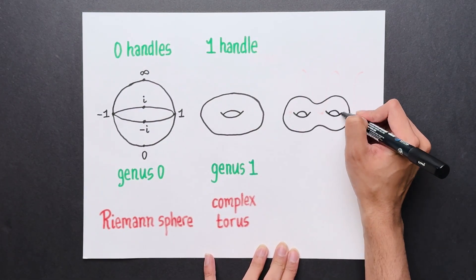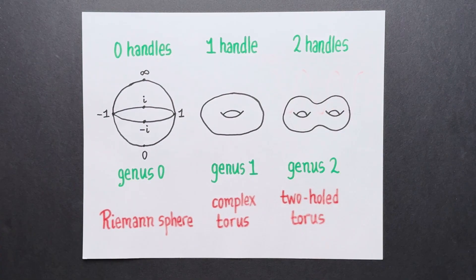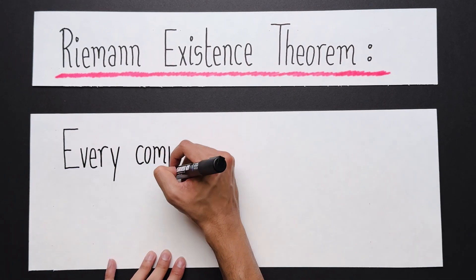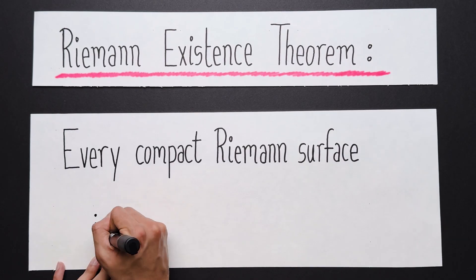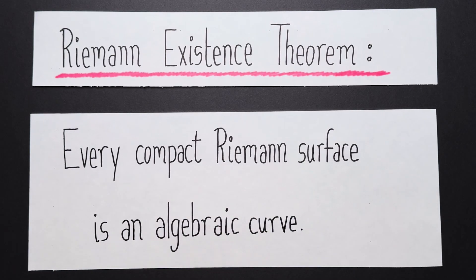It turns out that they have a deep link to a field of math called algebraic geometry. This is spelled out in a theorem called Riemann's existence theorem. It gives a profound connection between two branches of math, complex analysis and algebraic geometry.